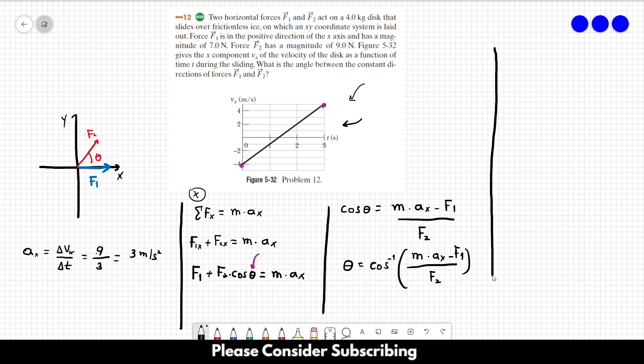All we have to do is replace the letters by the numbers. So the angle is the inverse function of the cosine: the mass is 4 kilograms, the acceleration in the x direction is 3, F1 is 7, and F2 is 9. And this gives us the angle which is 56 degrees, and that's the answer of this exercise.